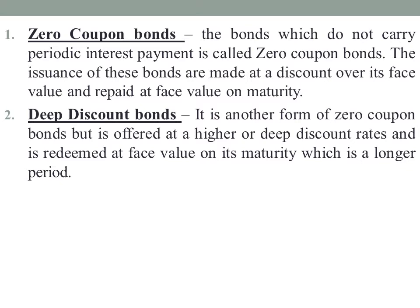Next is deep discount bonds. It is another form of zero coupon bonds but it is offered at a higher or deep discount rate and is redeemed at face value on maturity, which is a longer period. The discount rate is very deep — if zero coupon bonds might be issued at 75, deep discount bonds may be issued at 50 to 60, with long maturity periods.